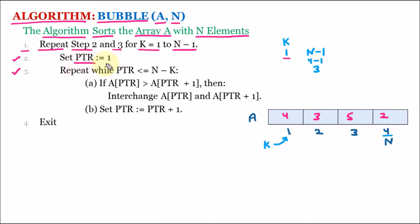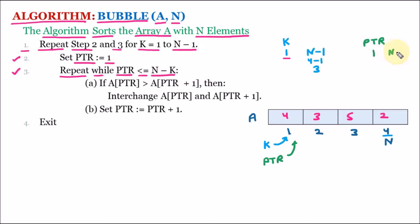So here PTR is equal to 1. We have one more variable PTR, and its value is currently 1. Step number 3 says repeat while PTR is less than or equal to N minus k. So PTR can go till N minus k. We know that N is 4 and k is 1, so 4 minus 1 equals 3. PTR can go till 3, and its current value of 1 is less than 3, so the condition is true.